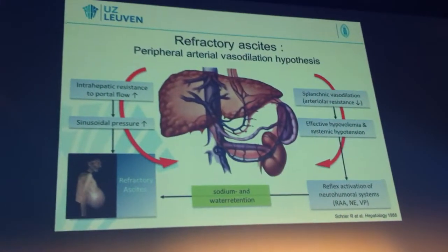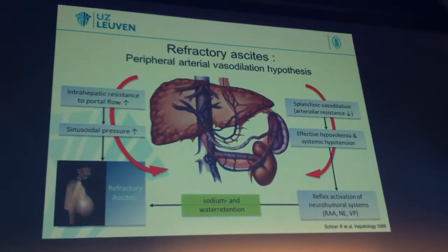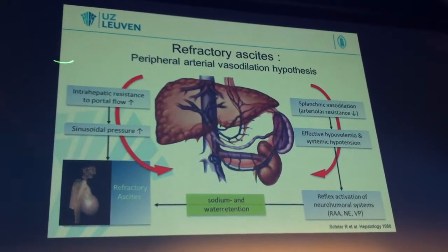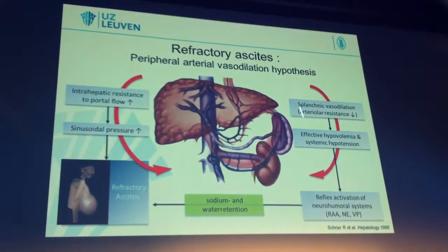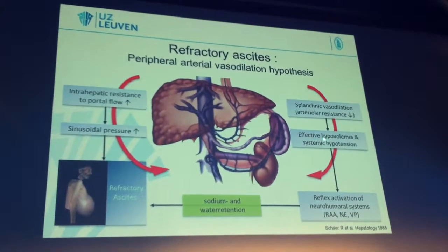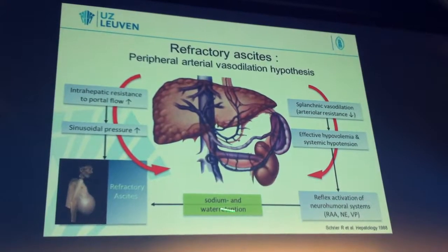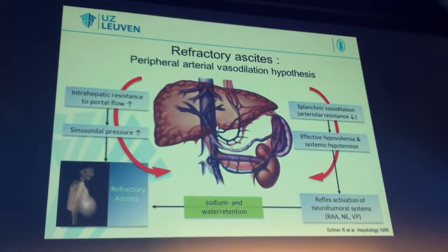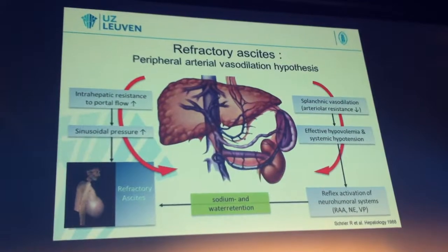How does refractory ascites arise? We need to go back to the peripheral arterial vasodilation hypothesis, which is based around two components. First, there is intrahepatic resistance to portal flow, and on the other hand, splanchnic vasodilation, which leads to effective hypovolemia and systemic hypotension, activating neurohumoral systems to accumulate sodium and water from the kidney. This is a perpetuum mobile — it goes on and on — and ends up with refractory ascites as an end result.